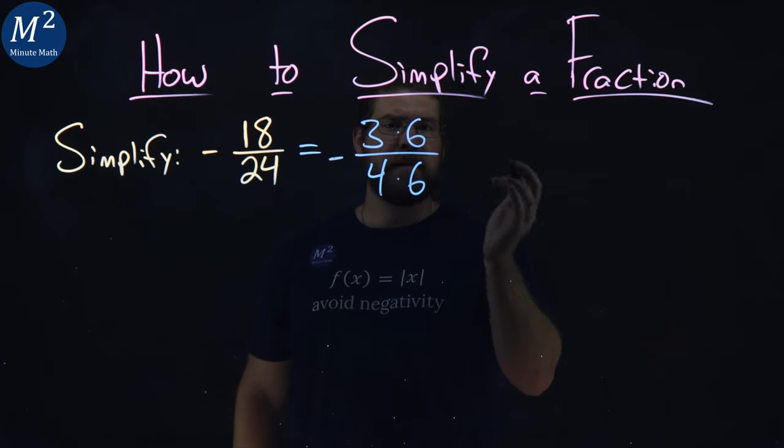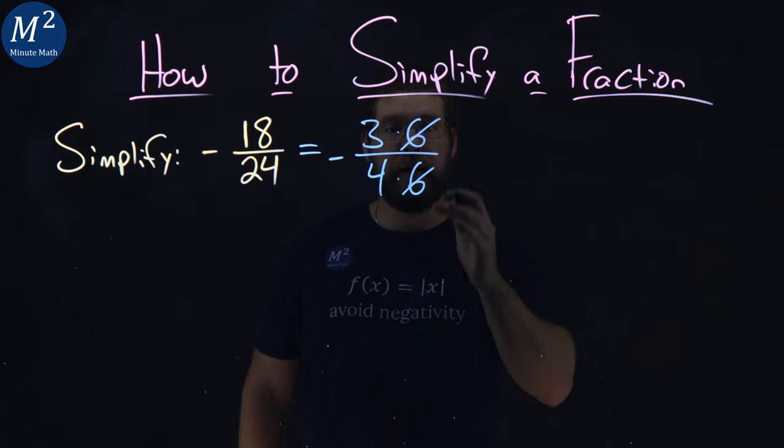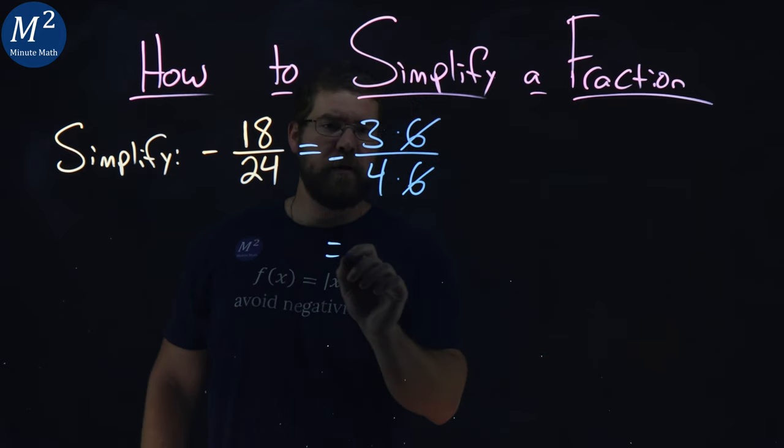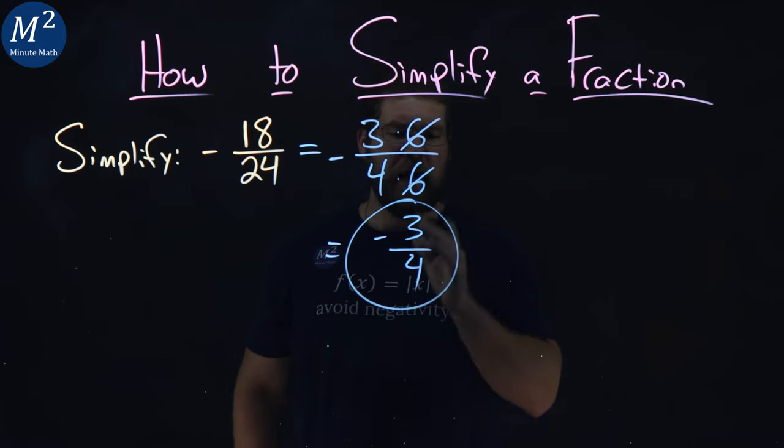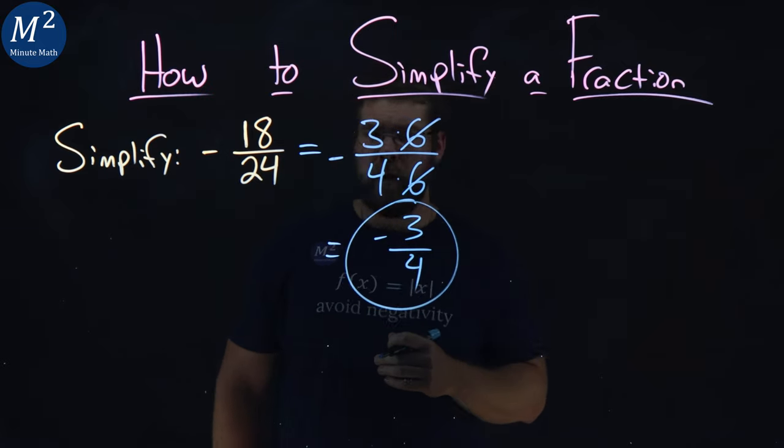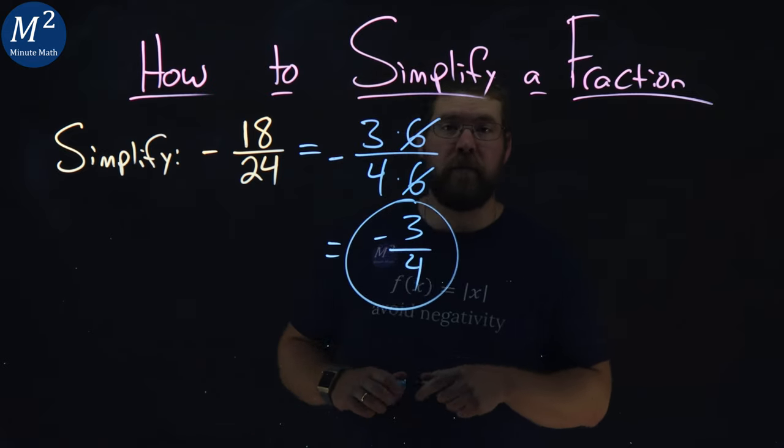Now, the common factor of 6 can cancel each other out in the numerator and the denominator. So, now we're left with a negative 3 fourths, and that's it. It can't break down anymore. So, negative 18 over 24 simplifies to be a negative 3 fourths.